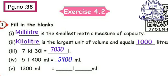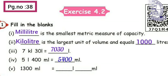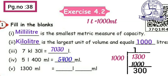Next: 1300 ml equals how many liters and milliliters? Milliliter to liter is smaller unit to bigger unit, so divide by 1000. 1300 divided by 1000 gives 1 remainder 300. So 1300 ml equals 1 liter 300 ml.